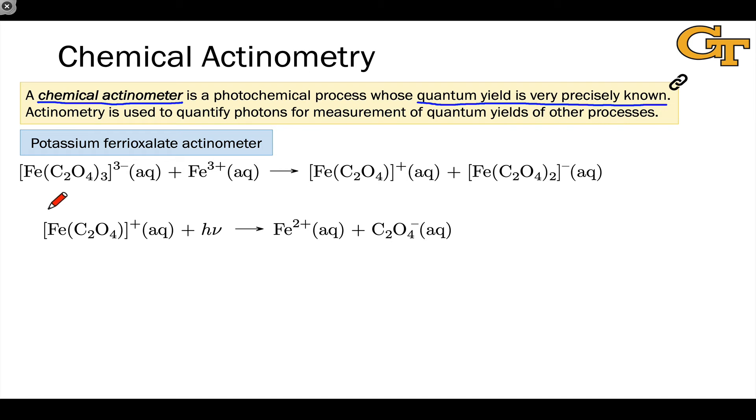The iron has a charge of +3, and the oxalate has a charge of -2, so that the overall complex has a charge of +1. The light absorption causes a photo-induced electron transfer process to take place within the complex from the oxalate to the iron.